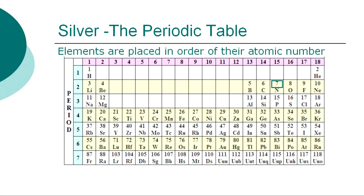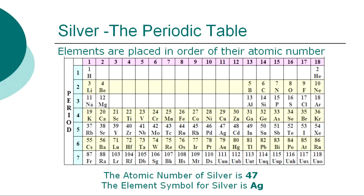The chemical elements of the periodic table are placed in order of their atomic numbers. Atomic numbers increase as you move across a row, called a group, or down a column, called a period. The atomic number of silver is 47, and the element symbol for silver is AG.